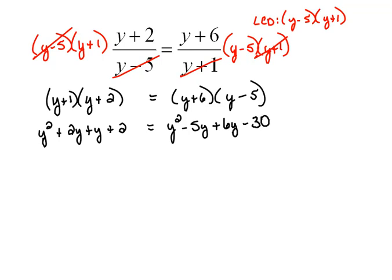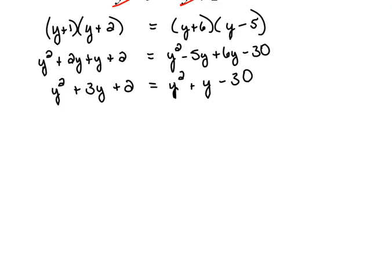And now let's collect like terms. So y squared plus 3y plus 2 will equal y squared minus 5 plus 1, which would be plus y minus 30. Now here again, we're going to continue collecting like terms.